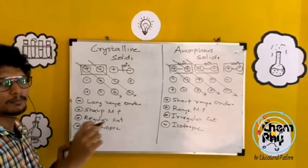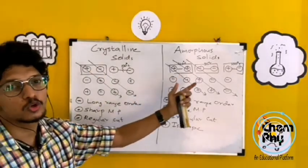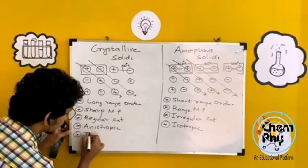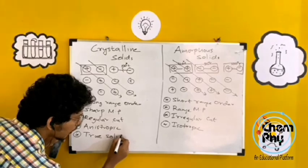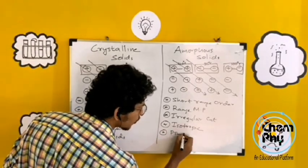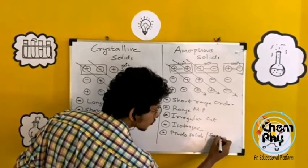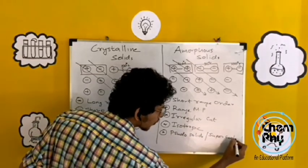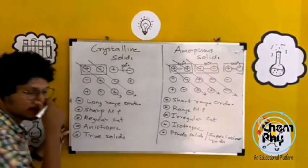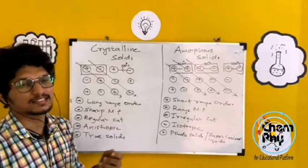Crystalline solids are true solids, while amorphous solids are pseudo solids or super-cooled liquids. Examples of amorphous solids include plastic and rubber.